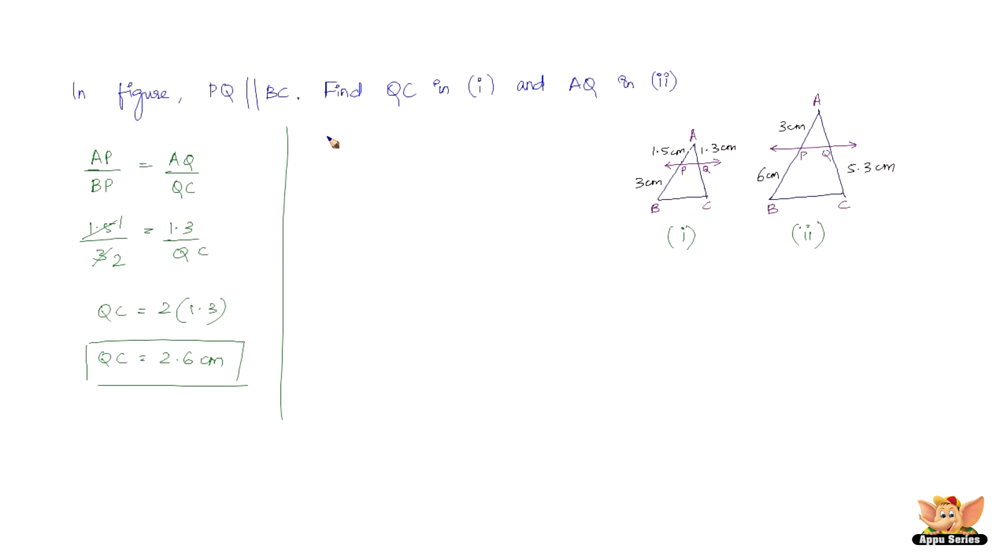In the second figure, from the same concept, AP by PB equals AQ by QC. We have AP as 3, PB as 6, and QC is 5.3. We need to find AQ. 3 goes 2 times in 6, so 2 AQ equals 5.3. Cross multiply to get AQ equals 5.3 by 2, which is 2.65 centimeters. This concludes this video. I'll see you in forthcoming videos with more complicated problems based on basic proportionality theorem.